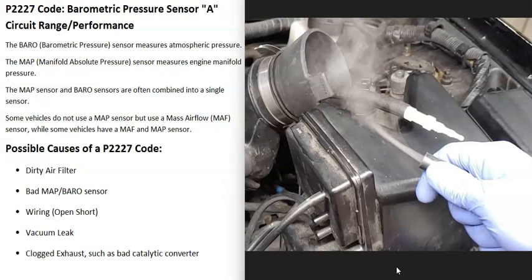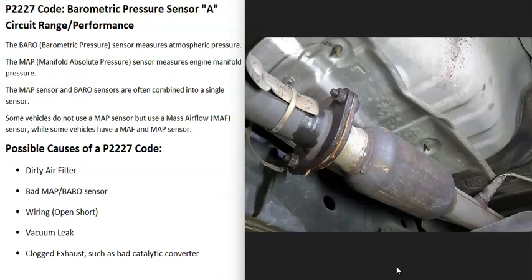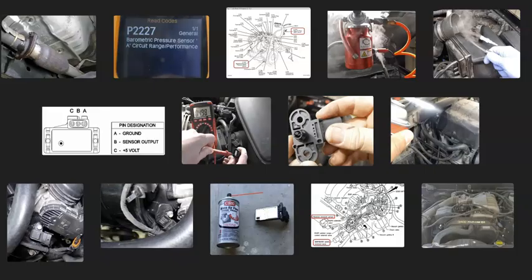The last possible cause is a clogged exhaust, like a bad catalytic converter. If the catalytic converter clogs up, the engine works harder to push air out, causing air to back up and throwing the sensors off. Usually a bad catalytic converter will generate other codes too, like catalyst codes or O2 sensor codes, so pay attention to any additional codes you're seeing.